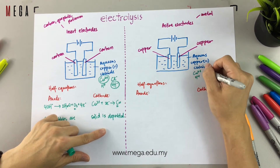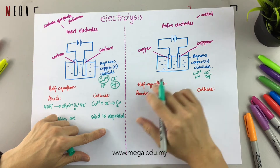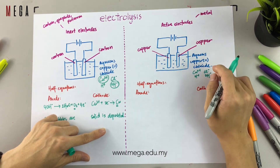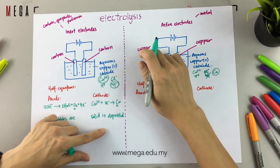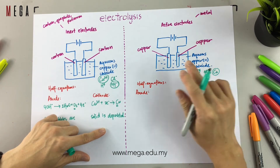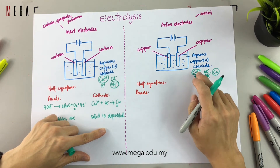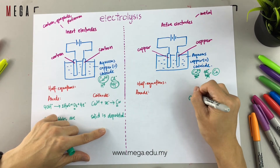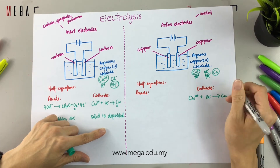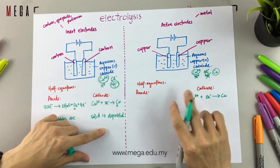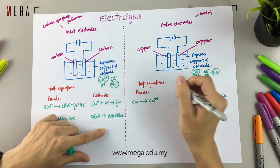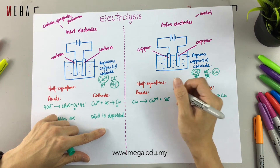Next, for the active electrode setup, the same ions are present: copper ions, chloride ions, hydrogen ions, and hydroxide ions. Since it is an active electrode, the copper electrode itself gets discharged at the anode, not the ions. So we start with the half equation at the cathode — Cu²⁺ gains electrons to form copper — then reverse the equation to get the half equation for the anode.